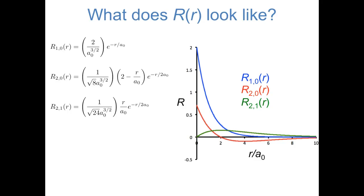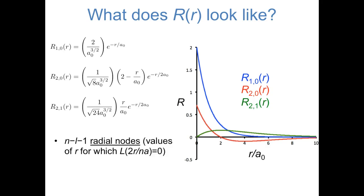I've plotted a few radial wave functions corresponding to different values of n and l — referenced by two numbers, such as R₂₀ meaning n=2, l=0. They vary in their number of radial nodes: R₁₀ and R₂₁ have no radial nodes, while R₂₀ does. In general, the number of radial nodes is n−l−1. Also notice the value of these functions where r=0. When l=0 — what chemists call s orbitals — the wave function is non-zero at the nucleus. When l is larger than 0 — p, d orbitals, etc. — the wave function is zero at the nucleus.